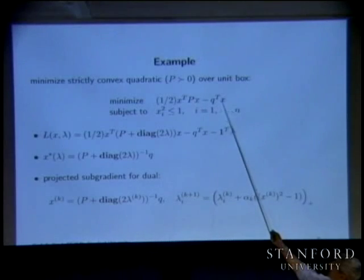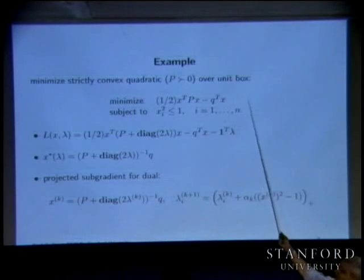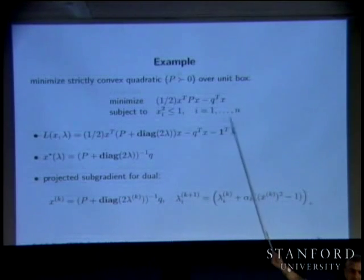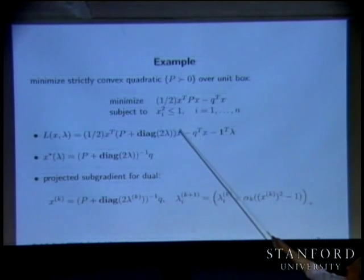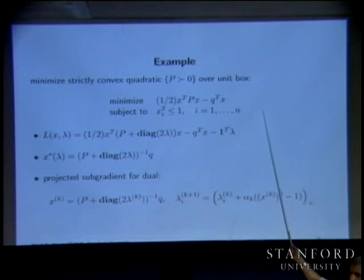You'd add a penalty — some number times X7 squared — adding a penalty for making X7 big. And then X12 is also big, so you'd add something there too.